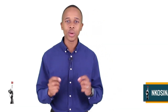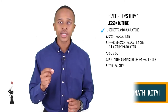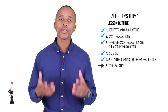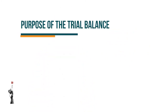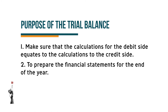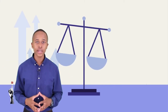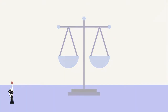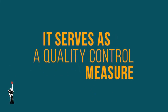Good day Grade 9 learners and welcome to Tumamina Teaching. In this lesson we will be looking at the trial balance for a trading business. The purpose of a trial balance is firstly to make sure that the calculations for the debit side equate to the calculations for the credit side, secondly to prepare the financial statements for the end of the year, and lastly to locate any possible errors. Once the general ledger has been balanced at the end of the month, it serves as a quality control measure.